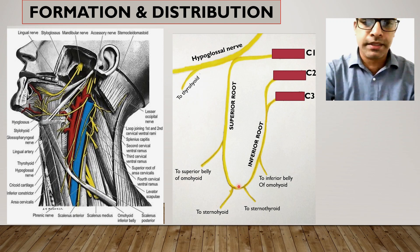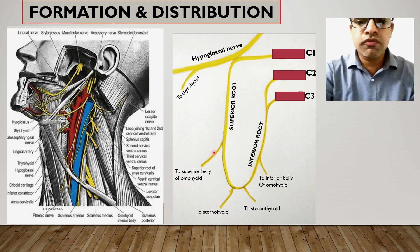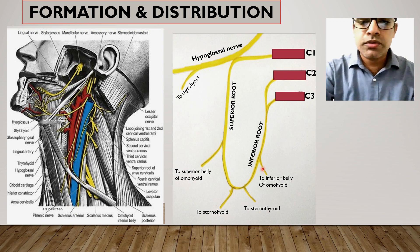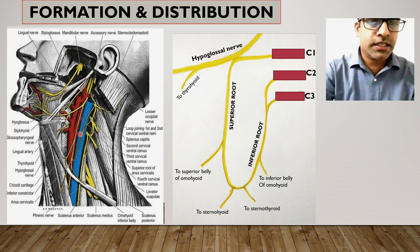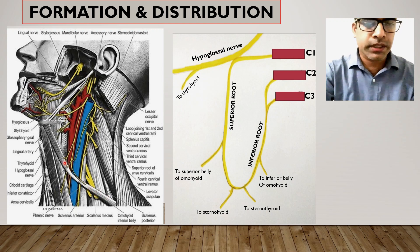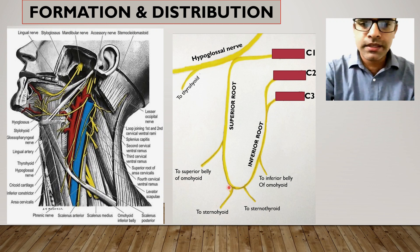From the inferior root, there is a branch that supplies the inferior belly of the omohyoid. So the superior belly of omohyoid is supplied by a branch from the superior root, while the inferior belly is supplied by a branch from the inferior root. From the ansa itself, branches arise to supply the sternohyoid and sternothyroid — sometimes arising as a common trunk that then divides into two, supplying sternohyoid and sternothyroid respectively.